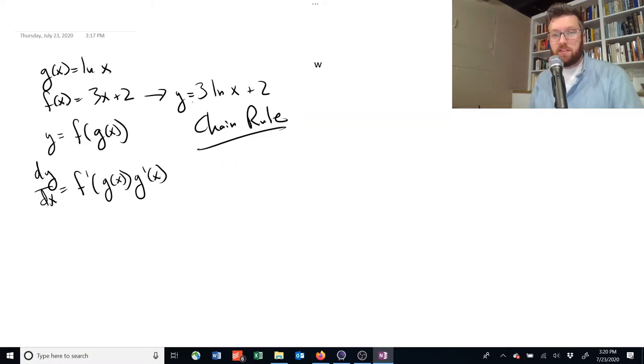In this example, where we've got y equals 3x plus 2, where x is equal to the natural log of x, we've got basically this equation. If we use the chain rule to solve that, we would start by saying dy/dx...